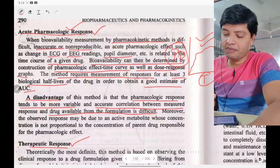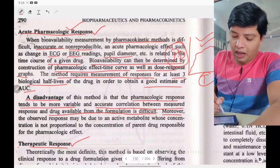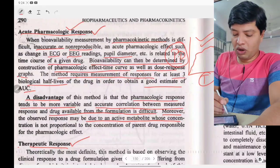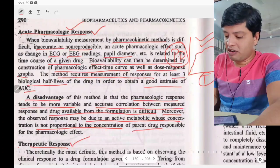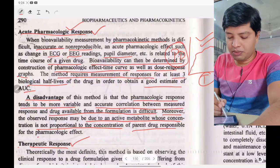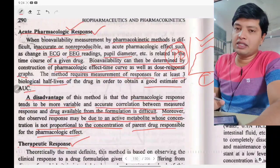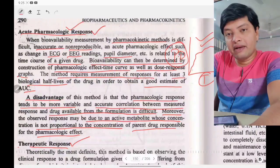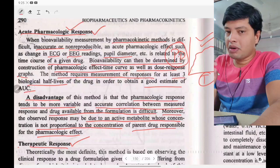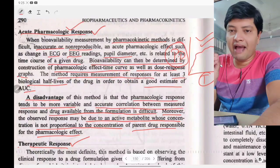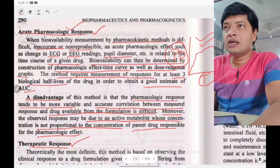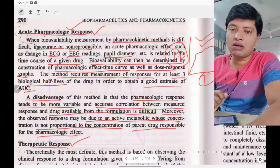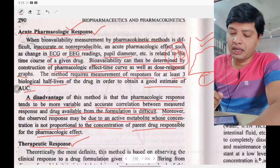Moreover, the observed response may be due to active metabolites whose concentration is not proportional to the concentration of the parent drug responsible for pharmacological action. Some drug metabolites show their own pharmacological responses, and in that case the exact actions of the parent drug and the metabolite cannot be directly correlated.